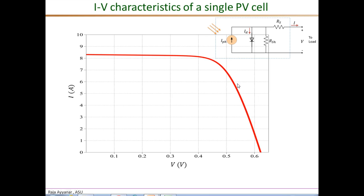The series and shunt resistances do have some effect, but as you can see from the plot — obtained by actual simulation of the PV cell model equation with realistic values of shunt and series resistances — the IV characteristics are really dominated by the diode characteristics examined in the previous slide.